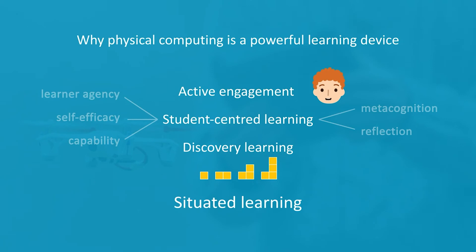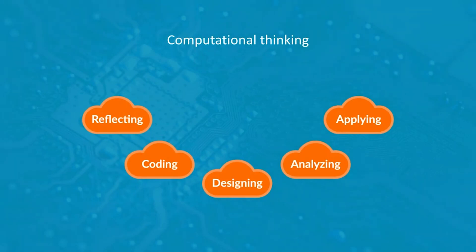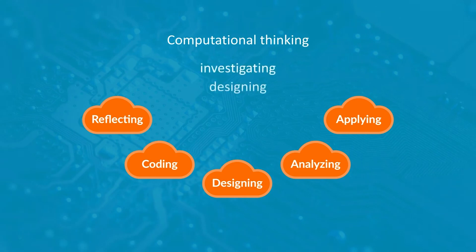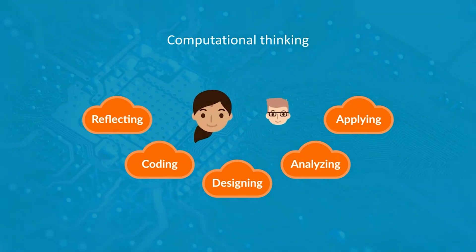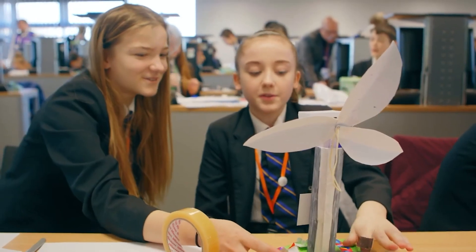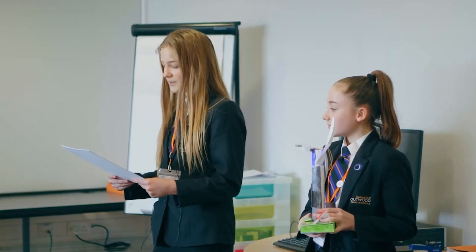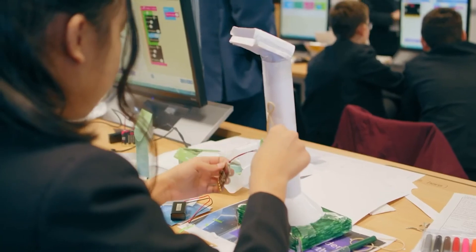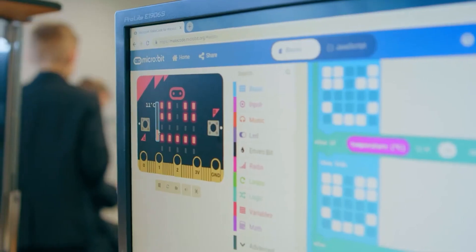Situated learning involves gaining skills and understanding in a real-life context, and includes community of practice ideas promoted by Jean Lave and Etienne Wenger. Physical computing applies problem-solving to real-world problems. The key learning values arising from physical computing include investigating, designing, modeling, and creativity. Because of the social elements of working together, physical computing develops learners' cooperation and collaboration skills. Communicating with each other and with others outside their group develops their communication and presentation skills. The opportunities presented by physical computing and the programming aspect ensure that the activities of computational thinking can also be developed.